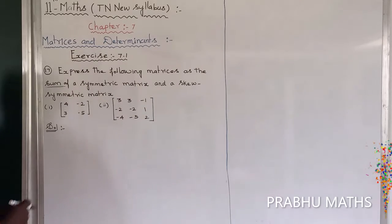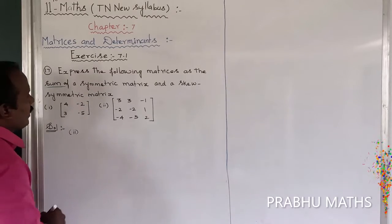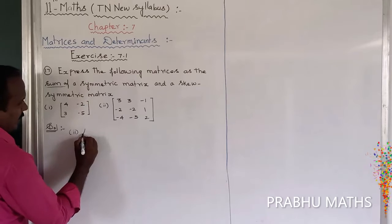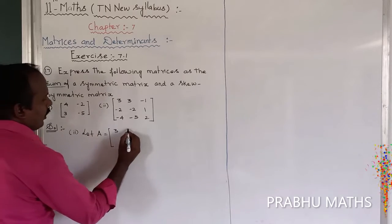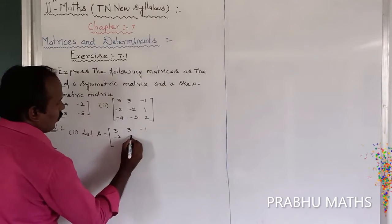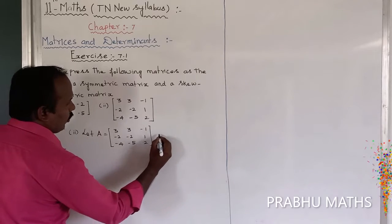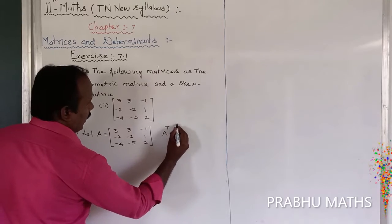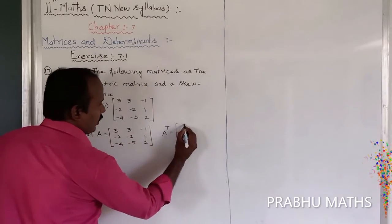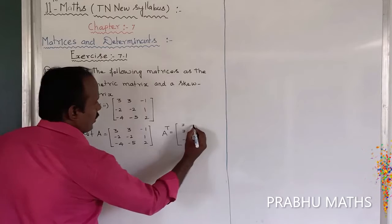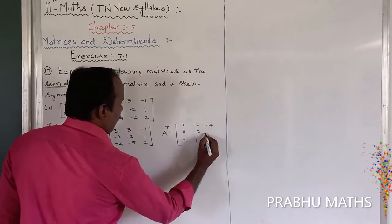This problem involves finding the symmetric and skew-symmetric parts of a matrix. The matrix A is given as a 3×3 matrix with values: first row 3, 3, minus 1; second row minus 2, minus 2, 1; third row minus 4, minus 5, 2. The transpose A transpose is obtained by changing rows to columns: first row 1, 3, 3, minus 1; then minus 2, minus 2, plus 1; then minus 4, minus 5, 2.